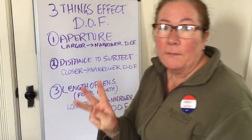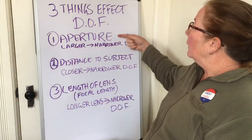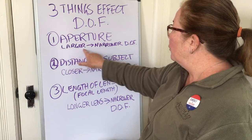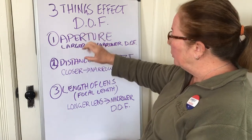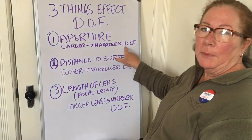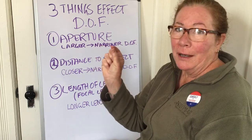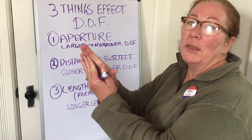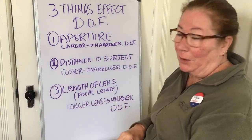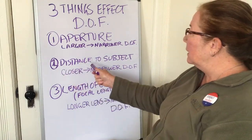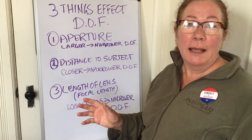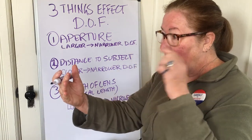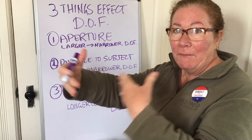So those are the only three things that affect depth of field. Your aperture is your main control — the larger the aperture, the bigger your window, the narrower the depth of field. Conversely, the smaller the aperture, the wider or deeper the depth of field. For distance to your subject, the closer you are to your subject, the narrower the depth of field.